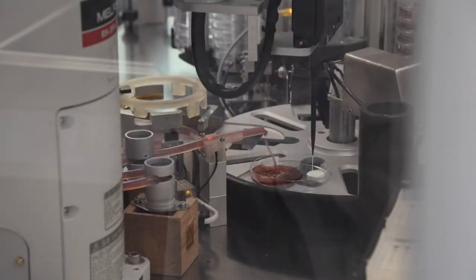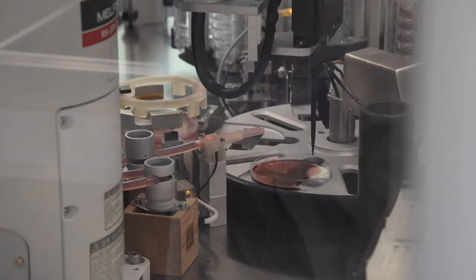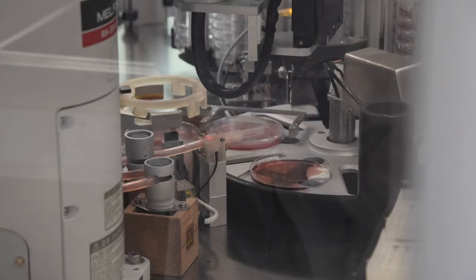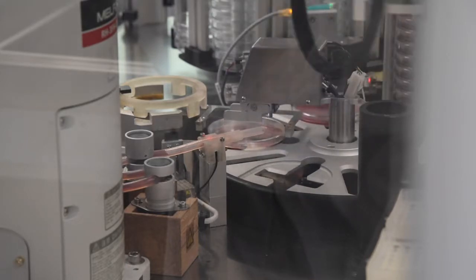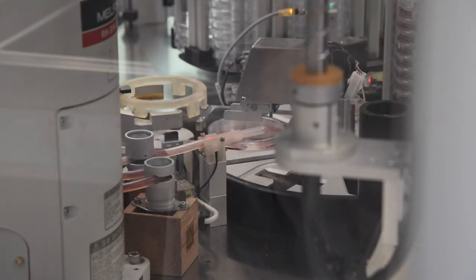Immediately after, molten agar is dispensed into the Petri dish using a peristaltic pump, connected to an autoclave filled with agar medium, held between 44 and 46 degrees Celsius, depending on the agar.